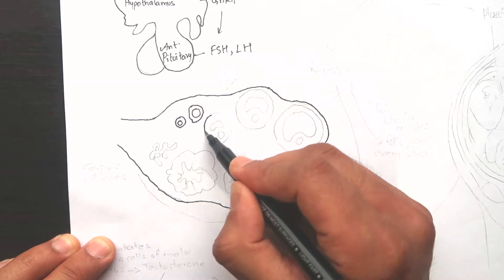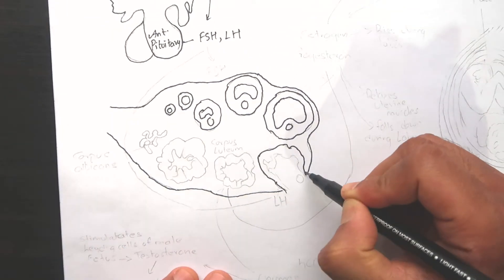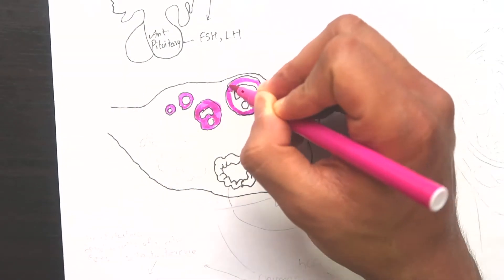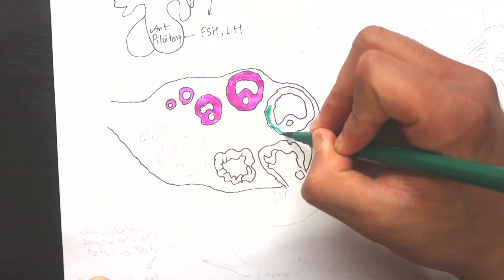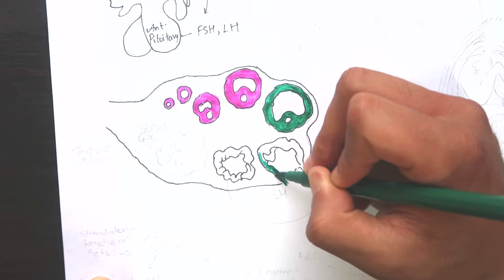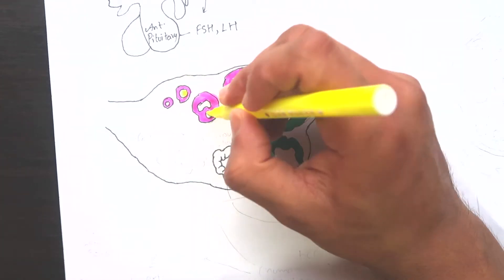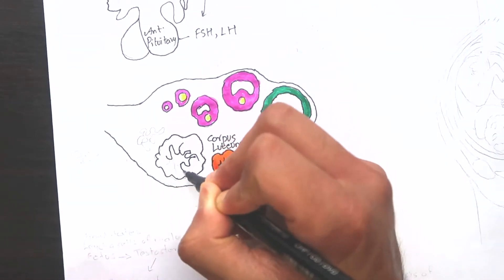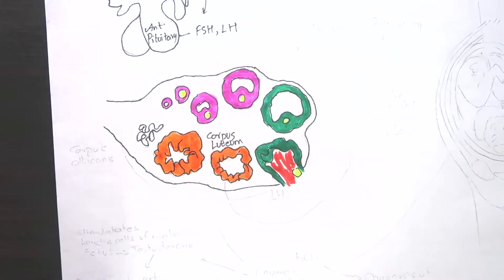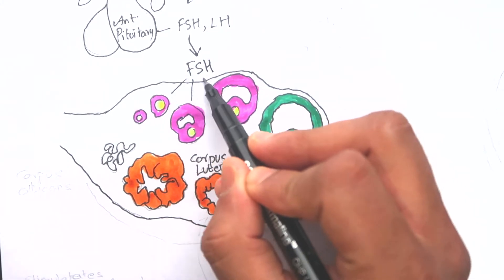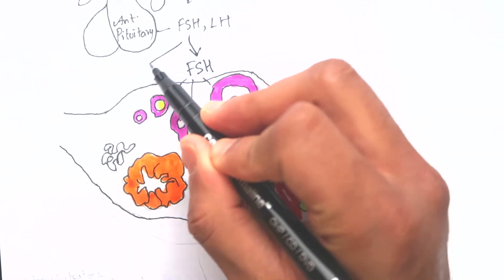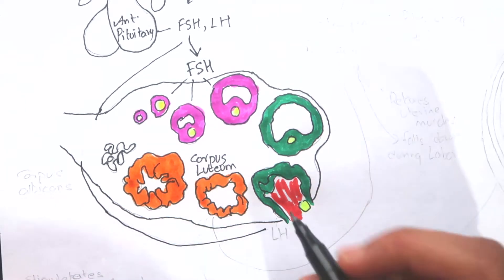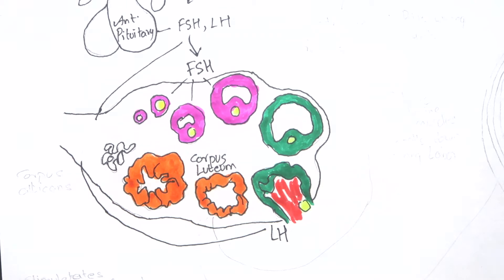Follicular maturation takes place during the first half of the menstrual cycle. The hormones essential for follicular maturation are mainly follicle stimulating hormone and a small proportion of luteinizing hormone as well. About 20 graafian follicles develop simultaneously in the ovary and only one of them is able to ovulate. The ovulation takes place under the influence of luteinizing hormone.